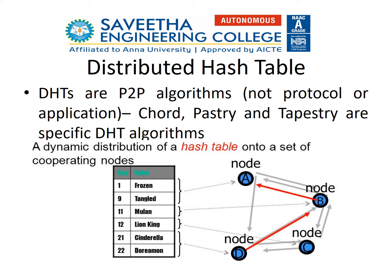Distributed hashing is similar to our DBMS hashing. We can retrieve the value based on the key. In the diagram, key 1 and 9's values are stored in node A. Key 11's value is stored in B. So we can retrieve key value 1 from node A, and key value 11 from node B. Similarly, Chord's distributed hashing works.